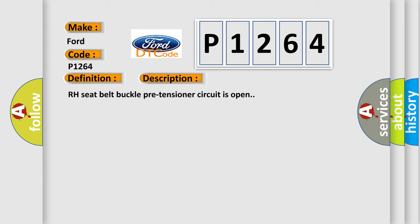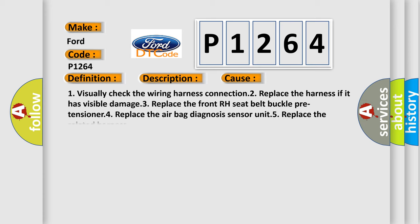This diagnostic error occurs most often in these cases: 1. Visually check the wiring harness connection. 2. Replace the harness if it has visible damage. 3. Replace the front RH Seat Belt Buckle Pre-Tensioner. 4. Replace the airbag diagnosis sensor unit. 5. Replace the related harness.